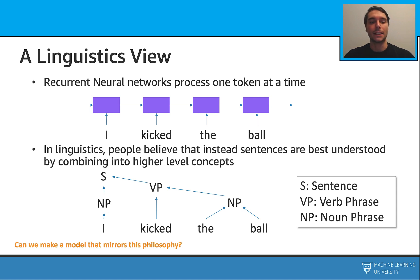For example, we get the sentence 'I kick the ball' and we try to merge things. We get 'the ball,' we make the noun phrase, we combine that with the verb phrase, and then we also combine that with the first noun phrase. And at the end, we get to a sentence. The question is: can we make the same thing with a model?